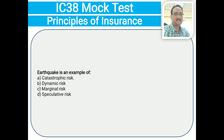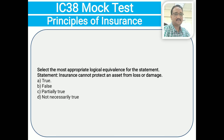Flood is an example of — catastrophic risk; dynamic risk; marginal risk; speculative risk. The correct answer is A: catastrophic risk. Risk indicates — fear of unknown; chances of loss; disturbances at a public place; hazard. The correct answer is B: chances of loss. Select the most appropriate statement: insurance cannot protect an asset from loss or damage — true; false; partially true; not necessarily true. The correct answer is A: true.